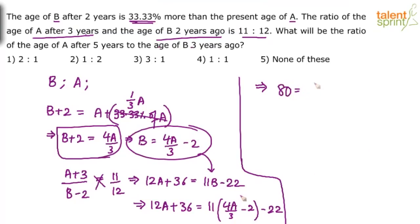80 equals to. This is 11 into 4. 44A by 3. There is nothing complex about it. How much is this? So 44 minus 36. 8A by 3. So A by 3 equals to 10. A equals to 30. So from this we get A equals to 30.